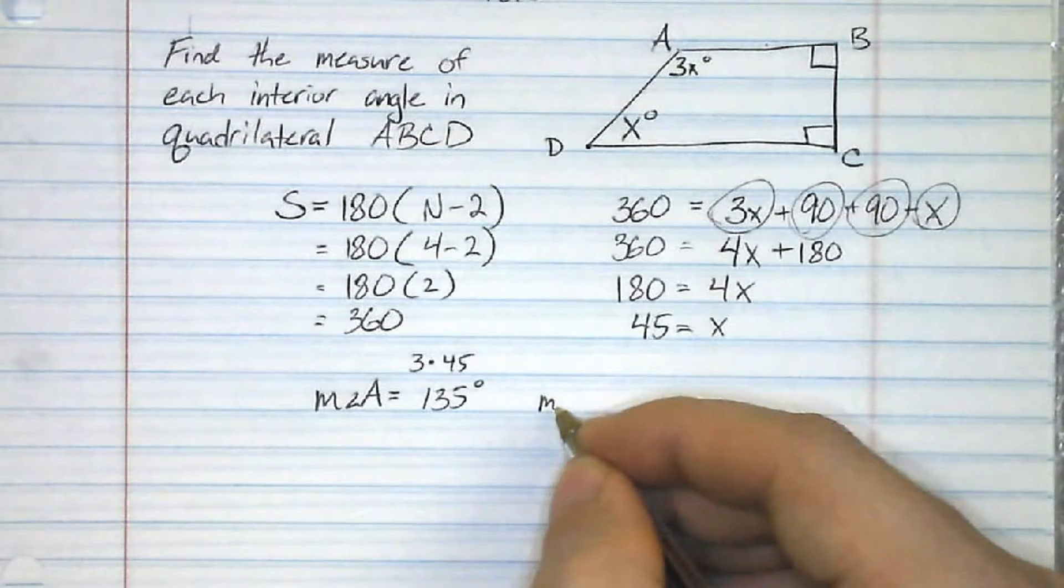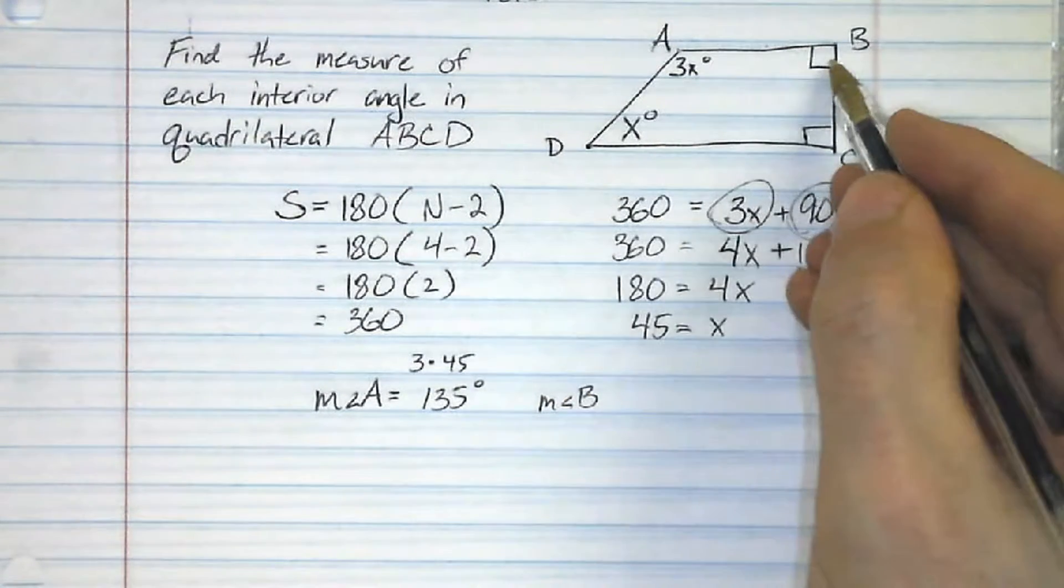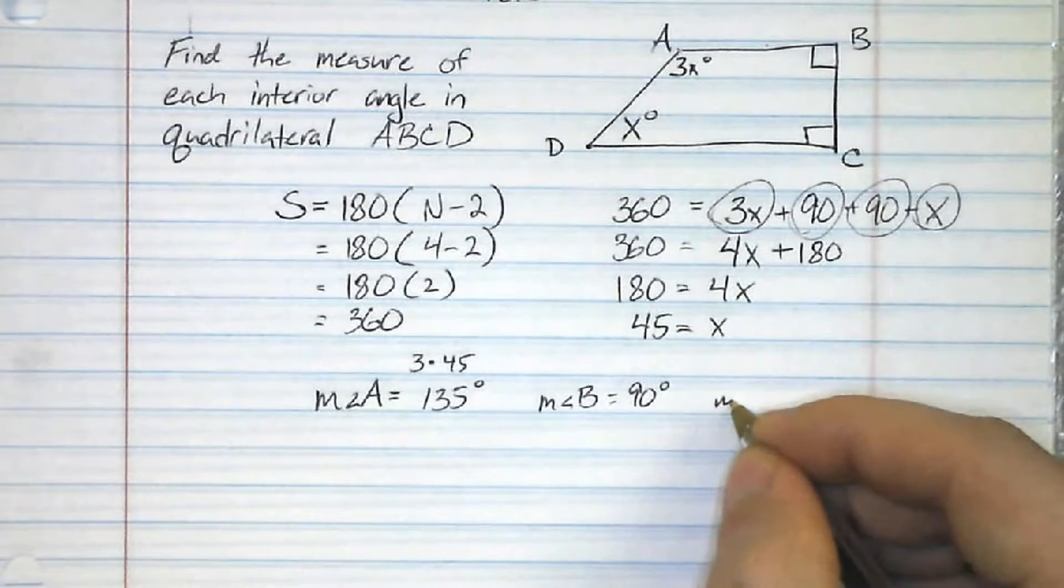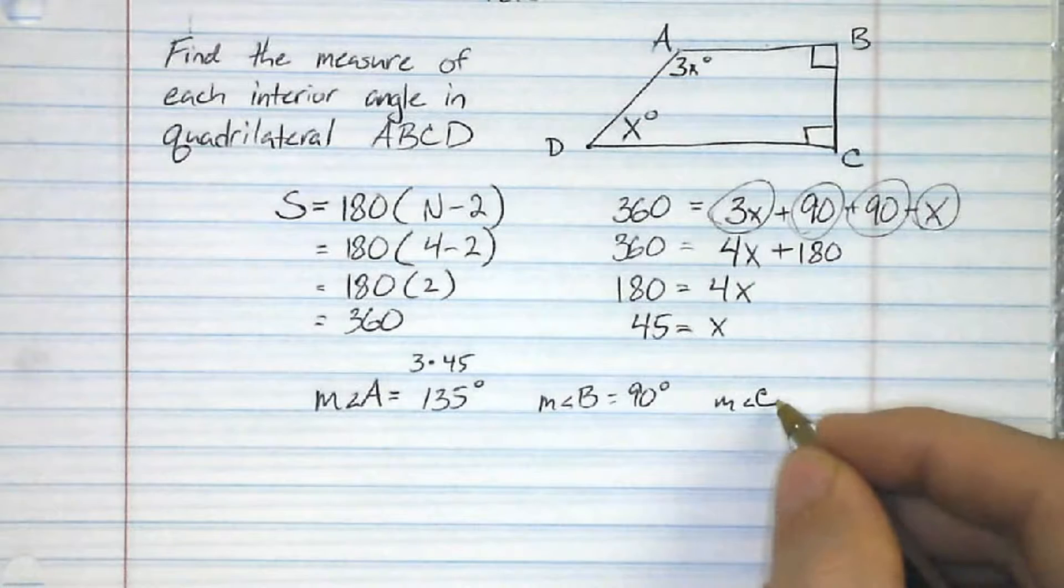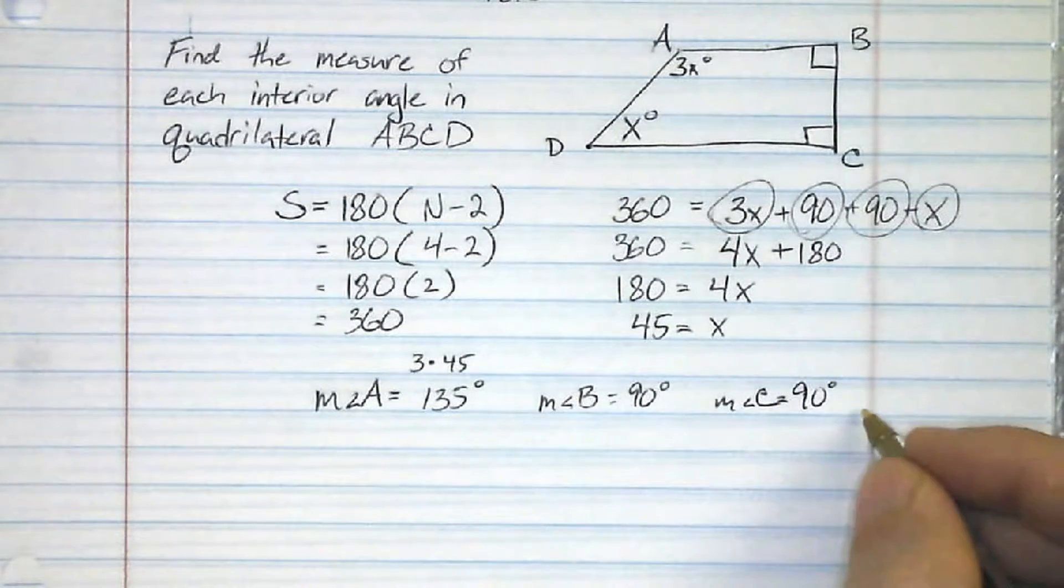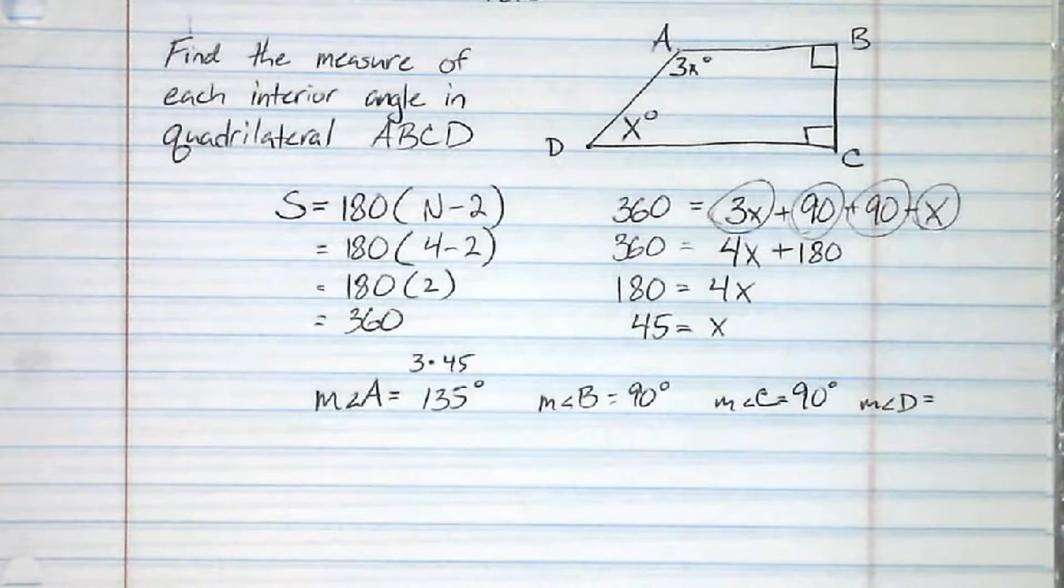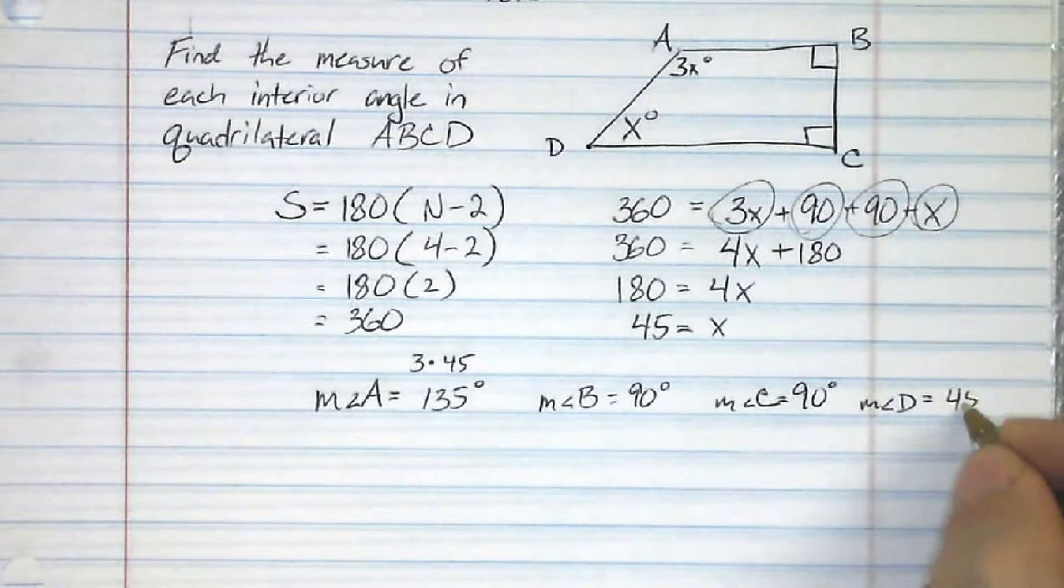The measure of angle B, well hopefully you don't really need to figure that out. That should be 90 and that's 90. We can tell by the notation there. Measure of angle C, 90. And for the measure of angle D, well this is just going to be x alone, so this would just be 45 degrees.